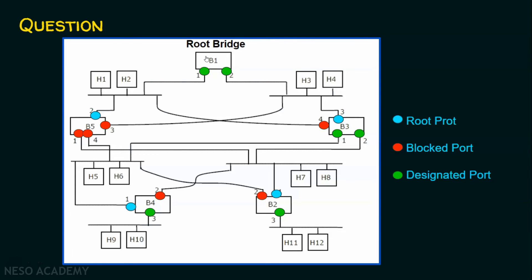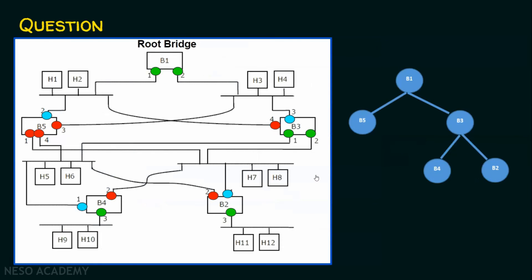When we construct the spanning tree, B1 is connected to B5 on the left hand side and to B3 on the right hand side. B4 and B2 are not connected to B5 because B5 is a bigger serial number value, so they are connected to B3. B3 contains B4 as the left child and B2 as the right child. So we now have the spanning tree.